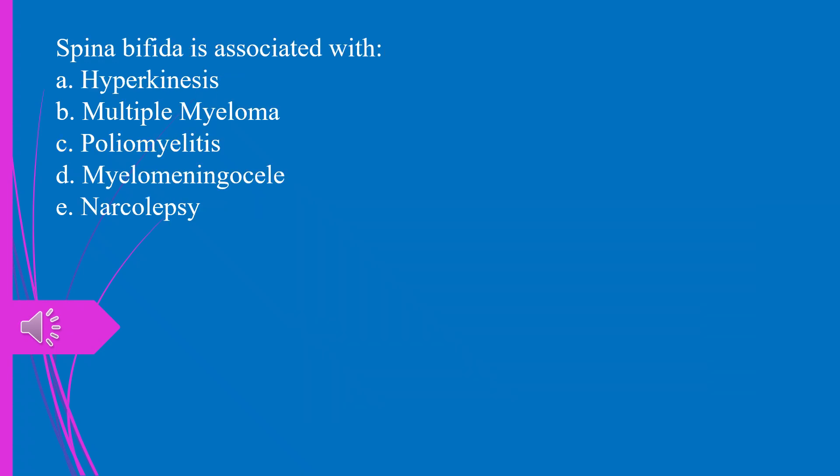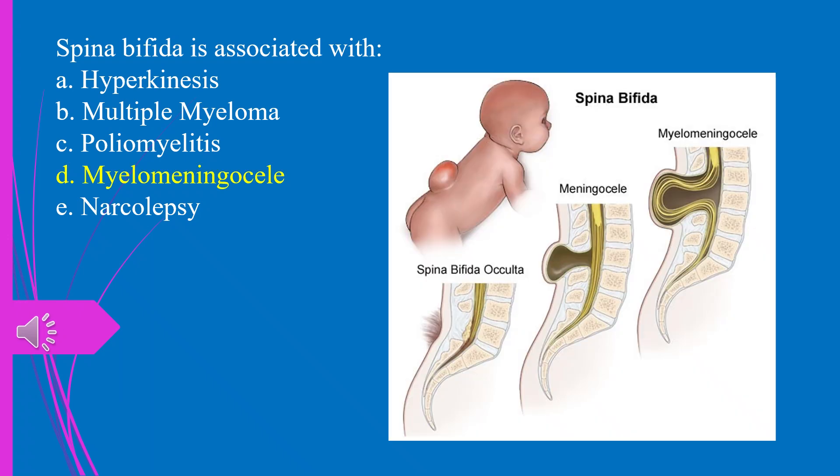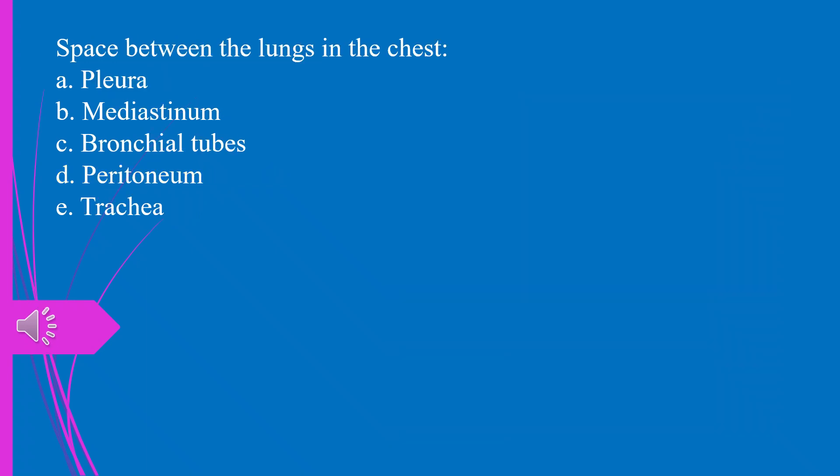Question 32. Spina bifida is associated with: a) hyperkinesis, b) multiple myeloma, c) poliomyelitis, d) myelomeningocele, e) narcolepsy. The answer is d, myelomeningocele.